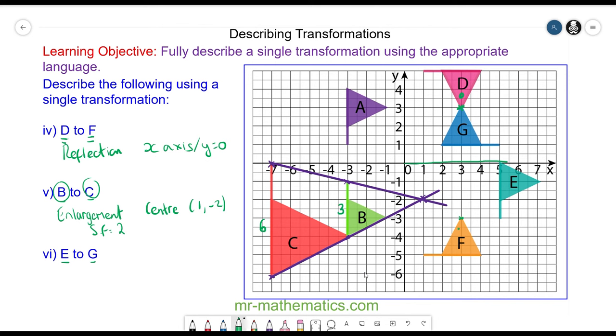Finally to describe the transformation that maps E onto G. We can see the two shapes are congruent so it will be a rotation. The centre is at 3 and negative 1. And you can see it is an anti-clockwise rotation of 90 degrees.